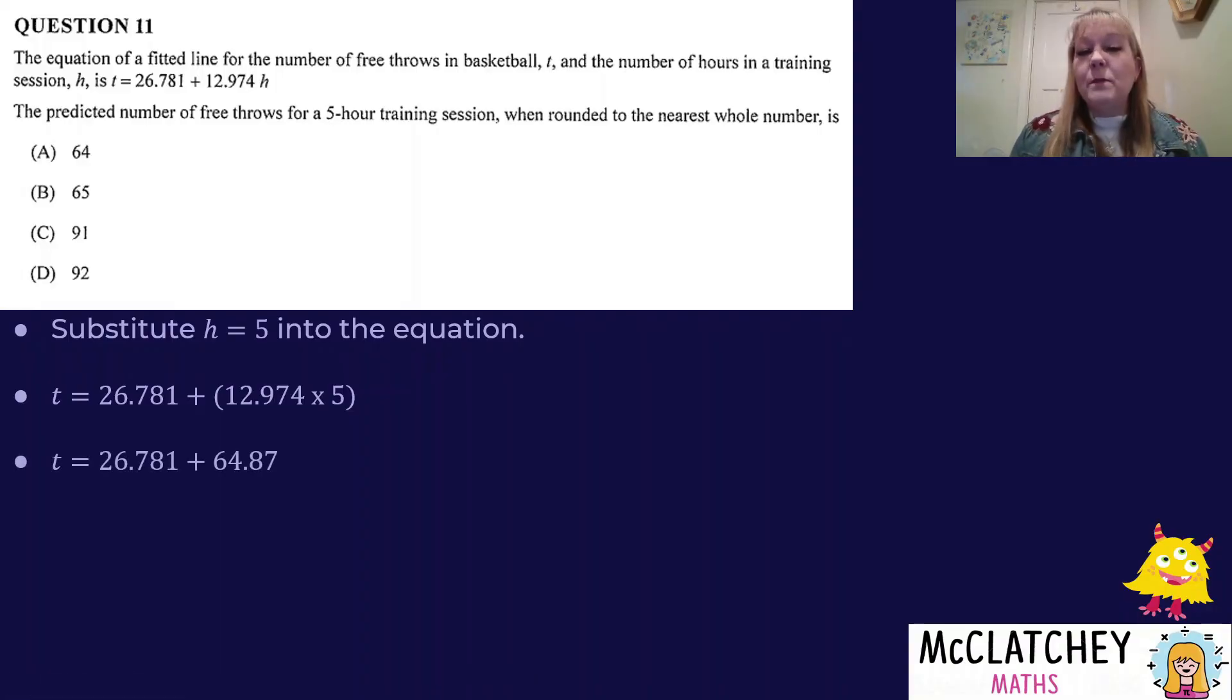So 12.974 times 5 gives me 64.87. Add that on to the 26, and you get 91. Now, all of the answers are rounded because the question asked us to round to the nearest whole number. This 6 next to the decimal point is greater than 5, that tells me I need to round the 1 up to a 2. The answer is going to be 92.